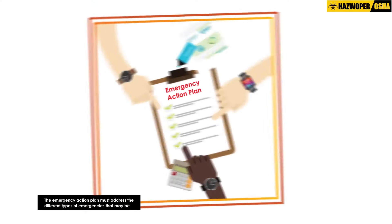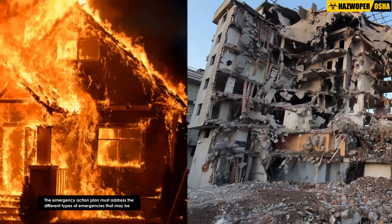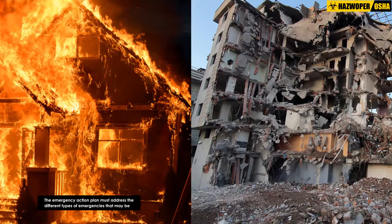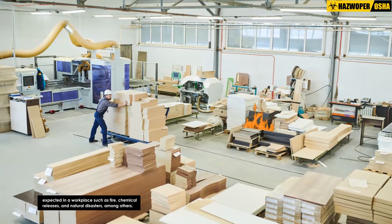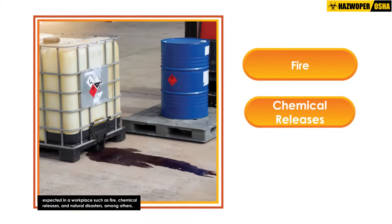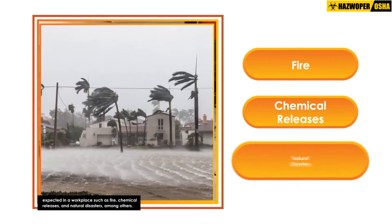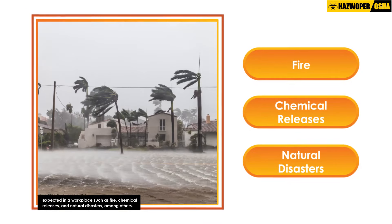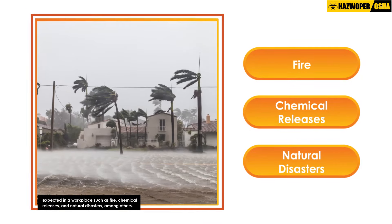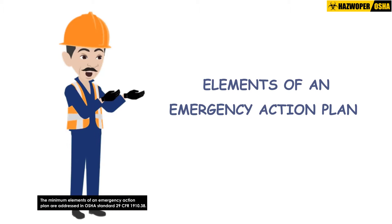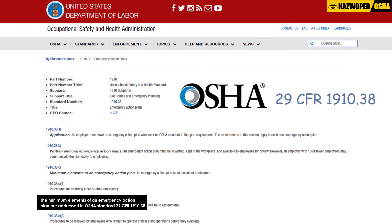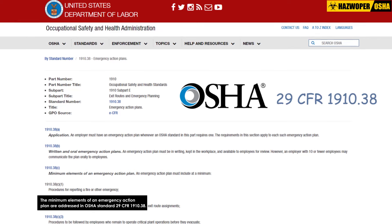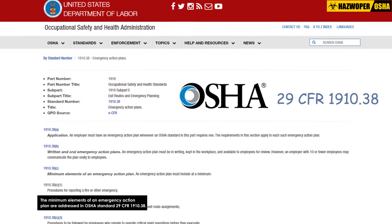The emergency action plan must address the different types of emergencies that may be expected in a workplace, such as fire, chemical releases, and natural disasters, among others. The minimum elements of an emergency action plan are addressed in OSHA Standard 29 CFR 1910.38.